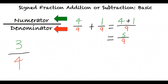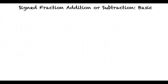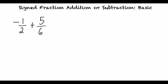But what do we do if the denominators aren't the same and we still want to add them? Let's take a look at a new example: negative 1 half plus 5 sixths. In this example, one fraction has a denominator of 6 and the other has a denominator of 2. To find the least common denominator, we need to find the least common multiple of 6 and 2.